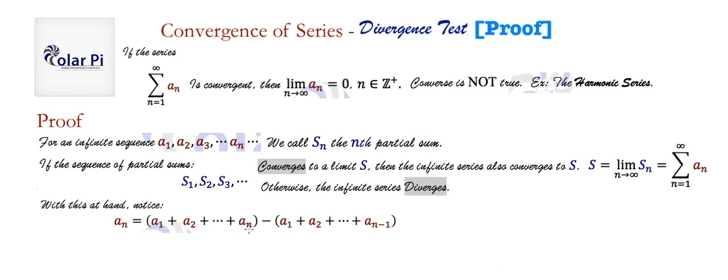But wait, this here is s_n, it's the nth partial sum. And this here is s_(n-1). It's the (n-1)st partial sum. So that's to say that a_n is equal to s_n minus s_(n-1).